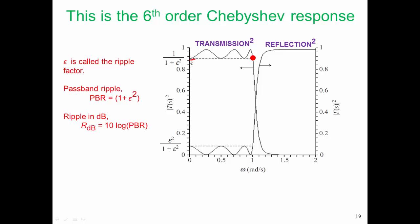This ripple factor here we start being down by the ripple, and then we go up to a perfect transmission in the passband, so we're not including loss in our circuit.